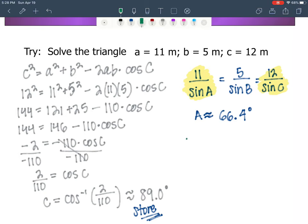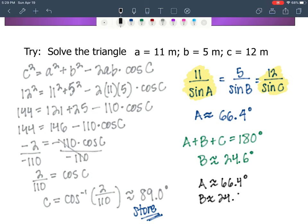And then now I can say angle A plus angle B plus angle C equals 180. When I take 180, subtract 89, subtract 66.4, I get angle B is approximately 24.6 degrees. So A is approximately 66.4 degrees, B is approximately 24.6, and C is approximately 89.0 degrees.